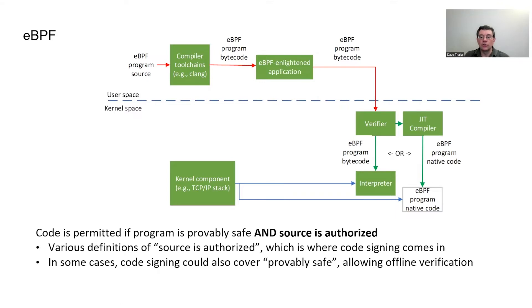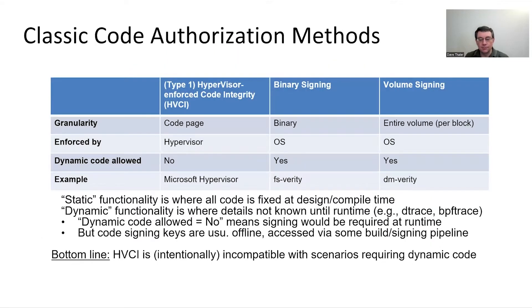We're only going to talk about how you decide whether the program source is actually authorized. When we look at different code signing mechanisms unrelated to or not specific to BPF, there are a couple of different varieties already out there. Especially on different operating systems, there's not a one-size-fits-all solution. Since a lot of the BPF community is familiar with Linux, let me talk about Windows first — or at least the Microsoft hypervisor first, which is not Windows-specific.